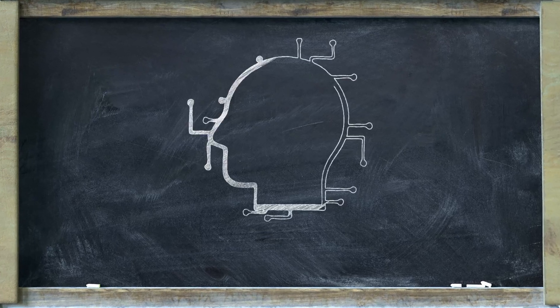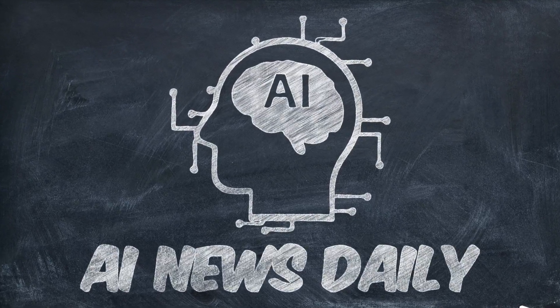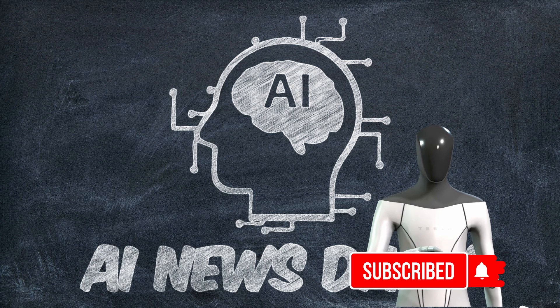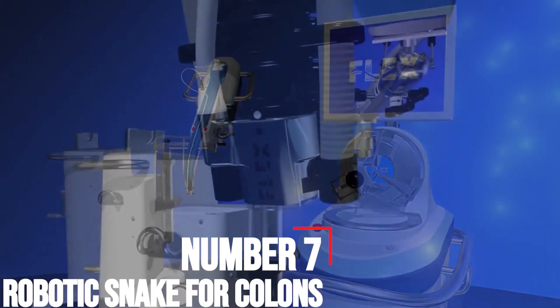But before we begin, we request you subscribe to the channel and press the bell icon to never miss another upload. Having said that, let's jump right in. Number seven, robotic snake for colons.